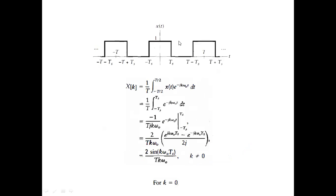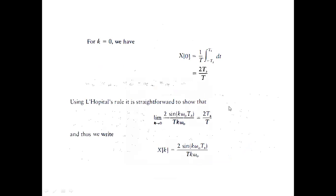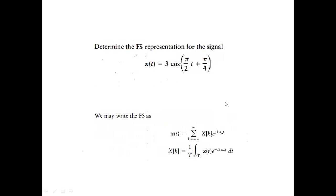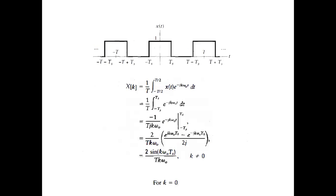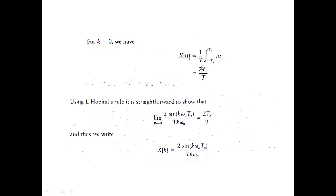For k = 0, the entire exponential term becomes 1, which integrates simply. Integrating 1·dt from -T_s to T_s gives 2T_s, so x(0) = 2T_s / T. So we have two expressions: for k ≠ 0 the standard formula, and for k = 0 the value 2T_s/T.